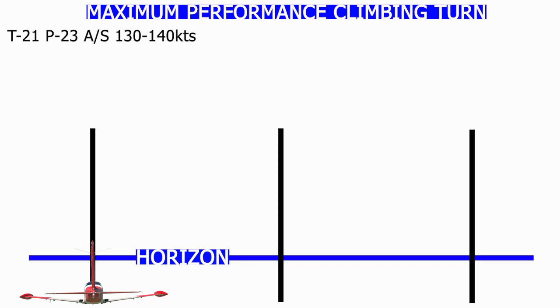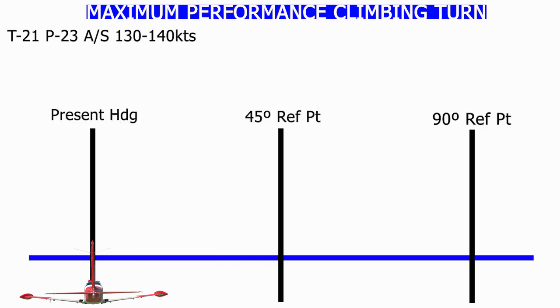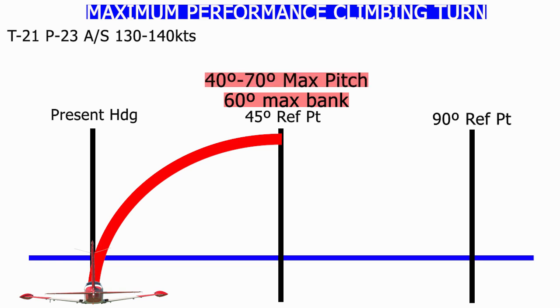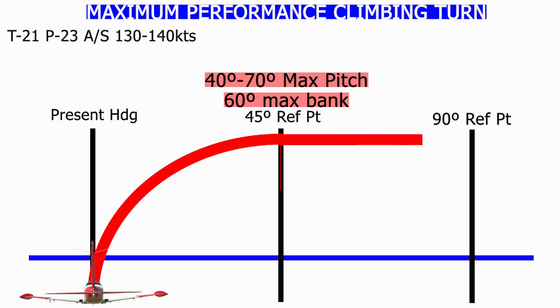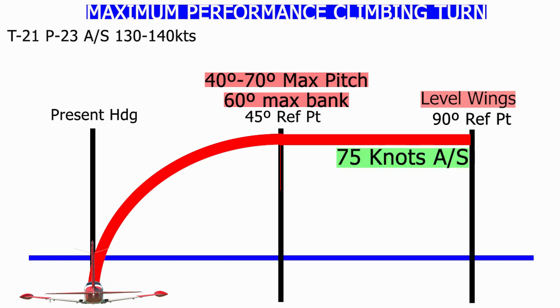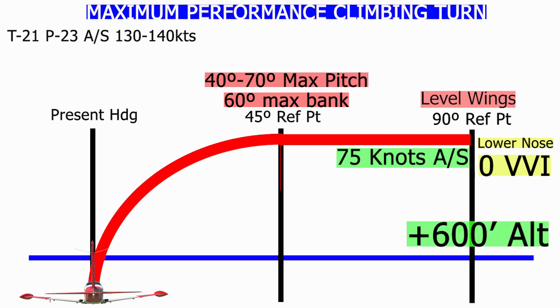Maximum Performance Climb. Conditions of flight: throttle 21, prop 23, airspeed at 130 to 140 knots. Visually clear the area and declare the present heading, 45 degrees and 90 degrees reference points. Blend rudder, aileron, and elevator to start a coordinated climbing turn. The maximum bank is 60 degrees, maximum pitch is 40 to 70 degrees, and top airspeed is 75 knots. At the 45-degree reference point, maximum bank angle and maximum pitch attitude must be established. Then start rolling out the bank angle while keeping the maximum pitch up attitude. Hold the pitch up attitude while completing rollout to wings level and establish the top airspeed of 75 knots. Adjust pitch attitude as necessary to maintain 75 knots airspeed. After completing the 90-degree change of direction, slowly lower the nose to straight and level attitude without letting the VVI go beyond zero reading. The maneuver is completed when the aircraft is back to straight and level flight. The minimum altitude gain should be at least 600 feet.